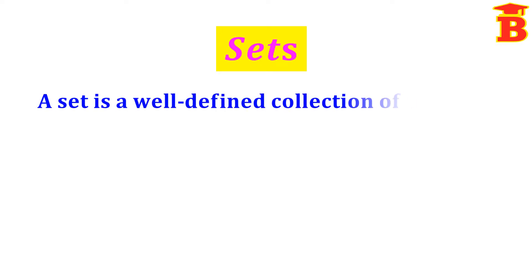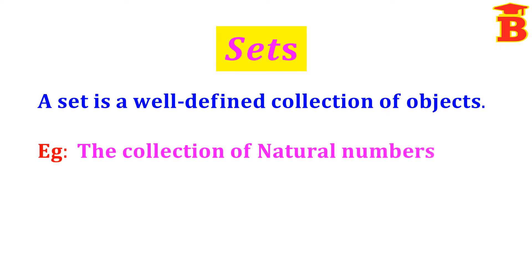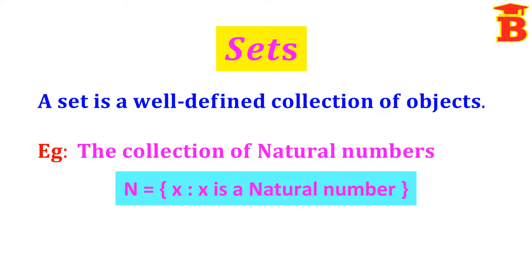First, a set means it is a well-defined collection of objects. For example, the collection of natural numbers — 1, 2, 3, 4, etc. — is a well-defined collection, therefore it is a set. This natural number set can be written in set builder form as: N = {X | X is a natural number}.